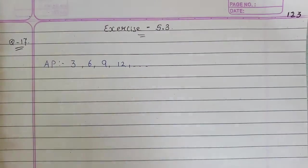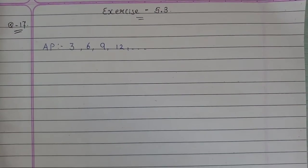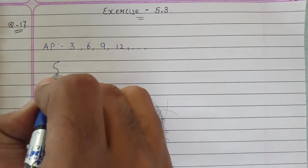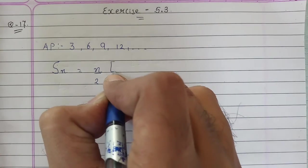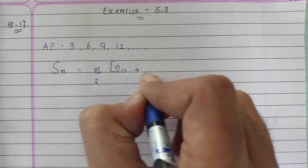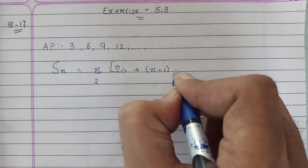Now we have to find the SN - total number of trees planted. The formula for SN is: N upon 2, times 2A plus N minus 1 into D.